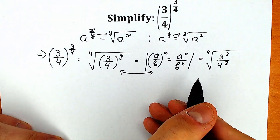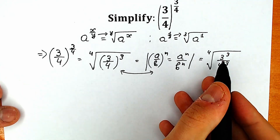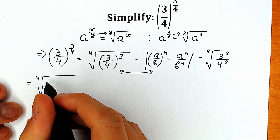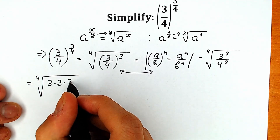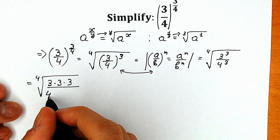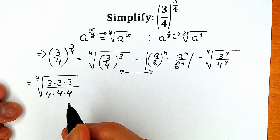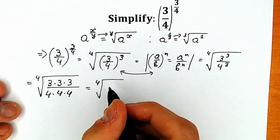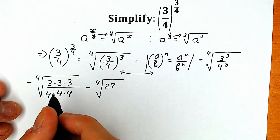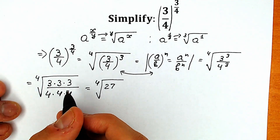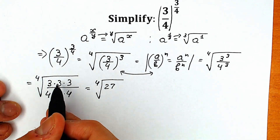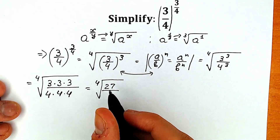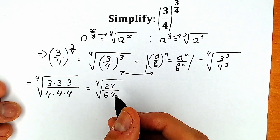Right now let's multiply: three times three times three is three to the third power, and four times four times four. So we have the fourth root of 27 over 64.